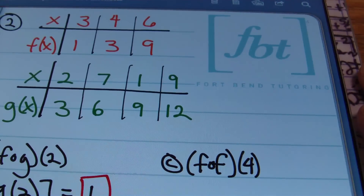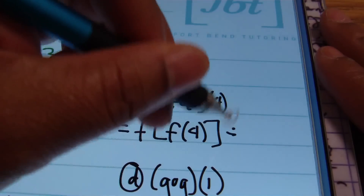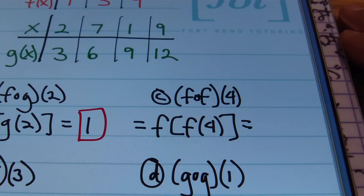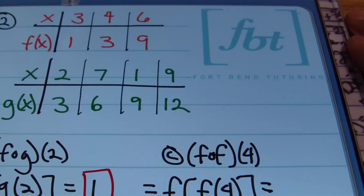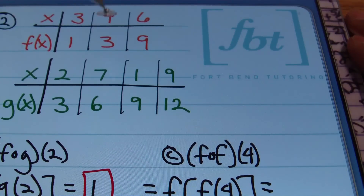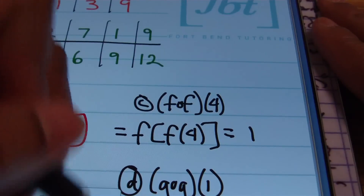Looking at 2C, we have F composite F of 4, meaning F of F of 4. We find F of 4 first — using 4 as X, we get a Y value of 3. Now that 3 is the result of F of 4, we plug 3 back into F. Using 3 as X in F gives a final answer of 1. We start with X equals 4, get 3, plug 3 back in as X, and end up with Y equals 1.